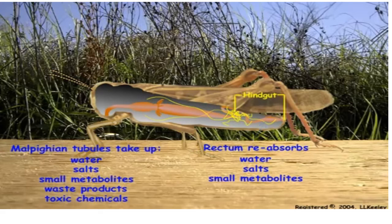By selectively taking all water, salts, and small molecules into the Malpighian tubules, then selectively reabsorbing the water, salts, and metabolites in the hindgut, the insect can rid its body of waste and any unanticipated toxic chemicals while maintaining a normal metabolite and water balance.